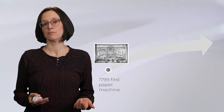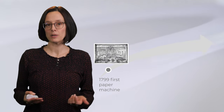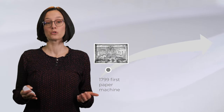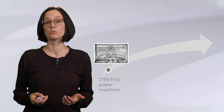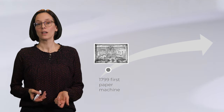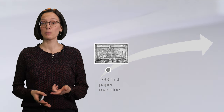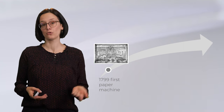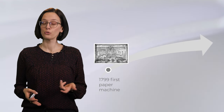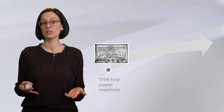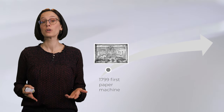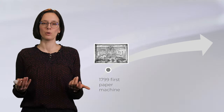As continuous production was implemented in other areas, other technologies emerged. For example, the first paper machine in 1799. Industrial paper production changed the way we produce paper and changed the way we communicate with each other. Continuous manufacturing can be applied to a large variety of fields, and food manufacturing was also changed by continuous manufacturing processes.